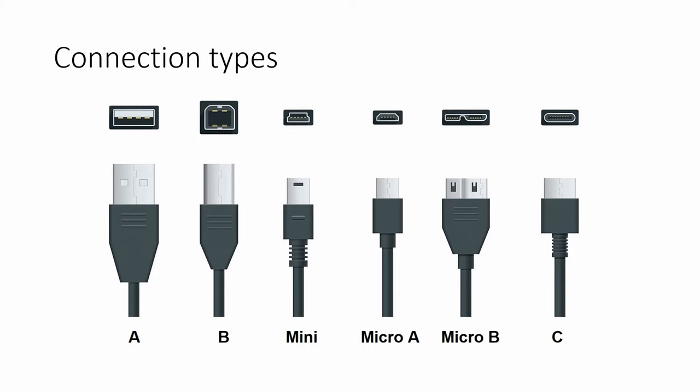First off, it helps to understand the different connection types. You have different types of cables that would plug in for different types of devices. The first one is Type A, which plugs into the computer. The rest of them are for specific devices, such as Type B, which is typically for printers.